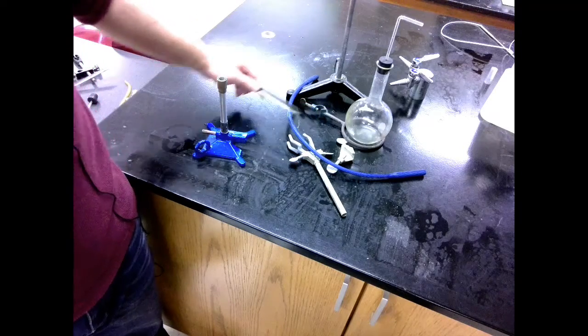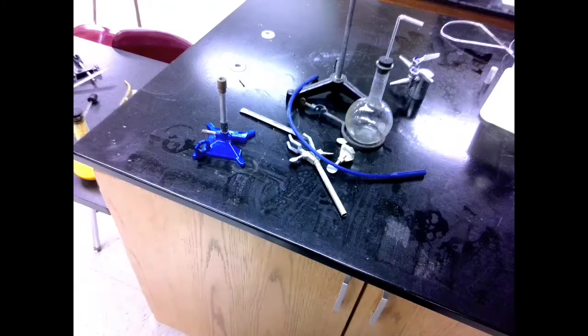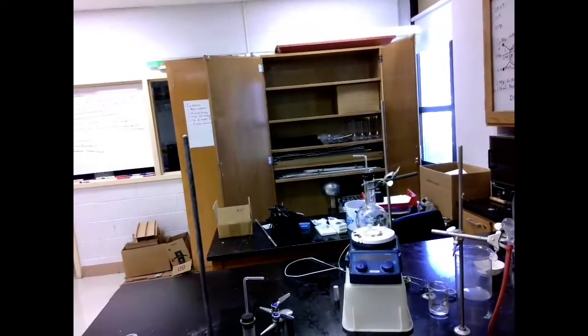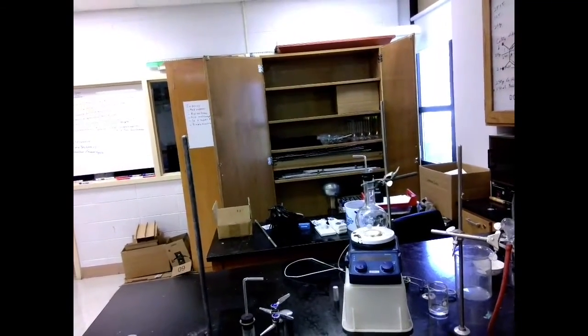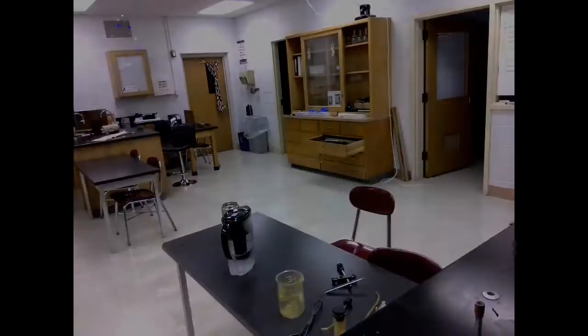These ring stands can be found in a couple places. Spare ring stands that fit into the tables can be found in the organic chemistry cabinet, and the sturdier ones that sit on the table can be found in that drawer that's open there.